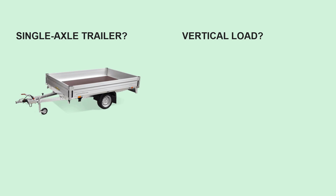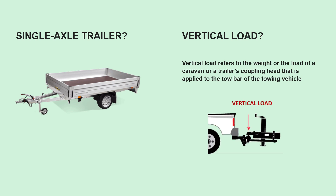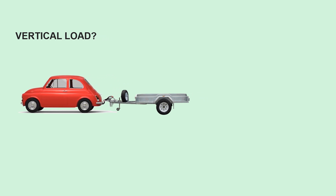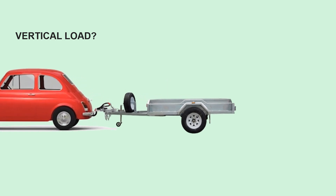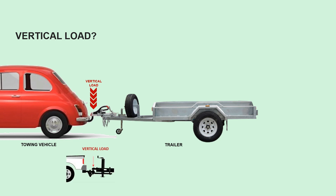What is vertical load? The term vertical load refers to the weight or the load of a caravan or a trailer's coupling head that is applied to the tow bar of the towing vehicle. This picture gives us a better understanding — we have a trailer's coupling head attached to the tow bar of the car. Vertical load is the force or weight that acts on the towing device of the towing vehicle.